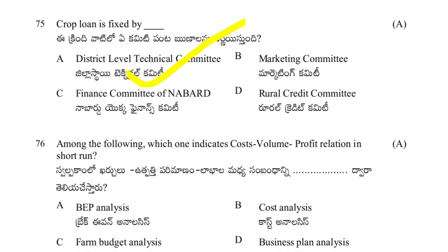Which of the following indicates a cost-volume-profit relation in the short run? Options: BEP analysis (break even point analysis), cost analysis, firm budget analysis, or business plan analysis. The answer is A — BEP (break even point) analysis.